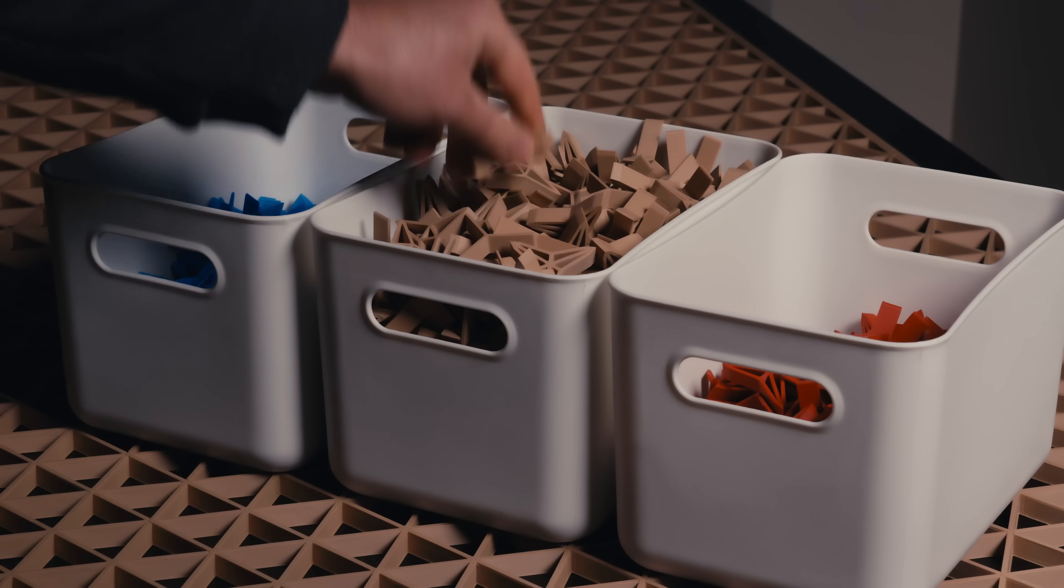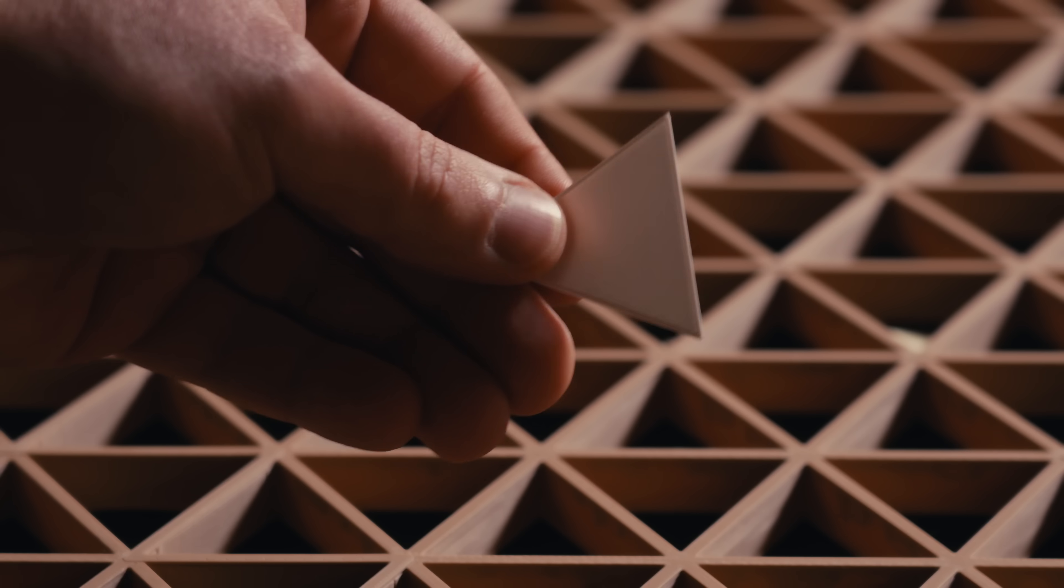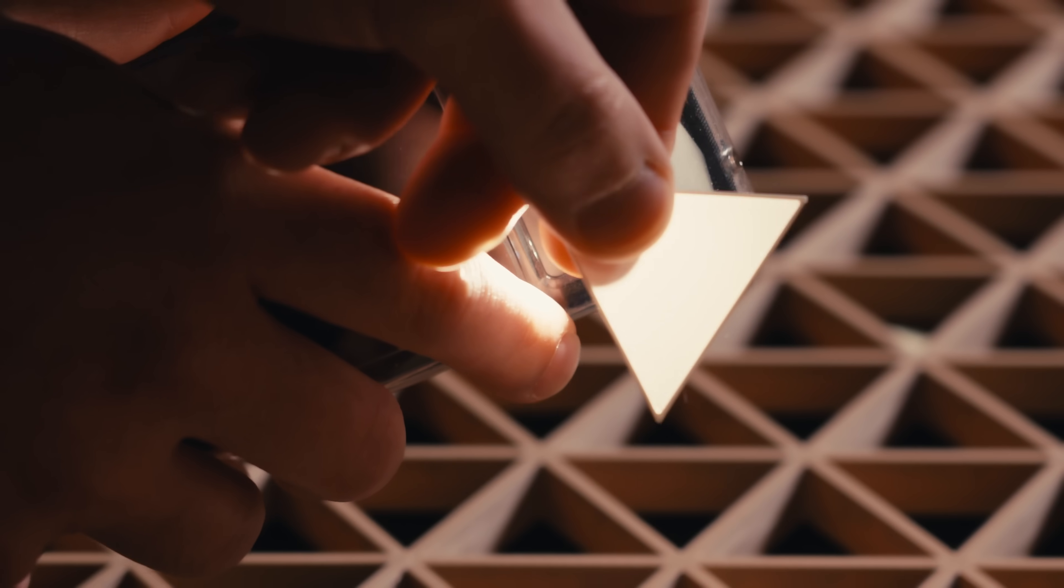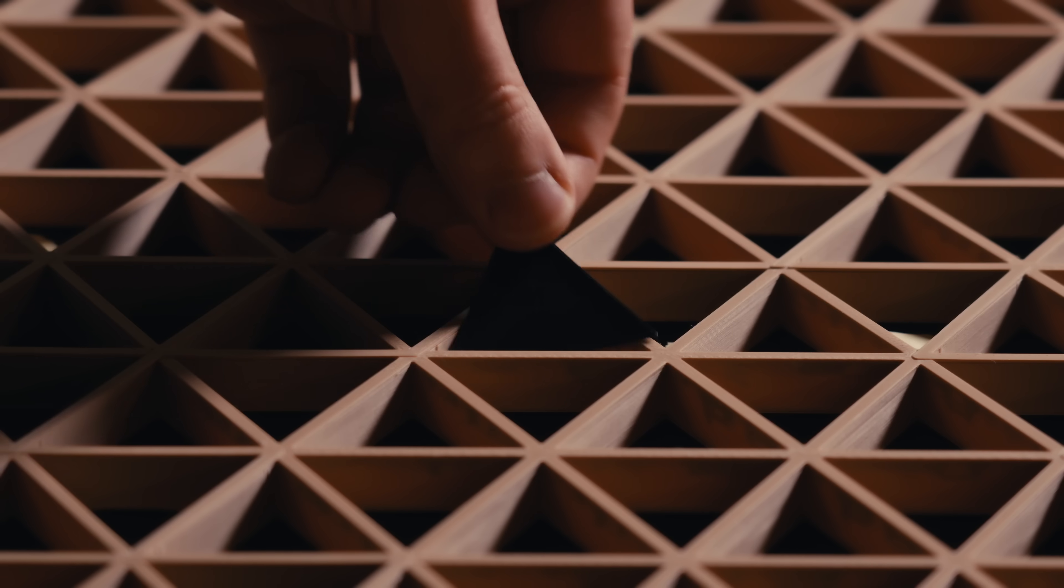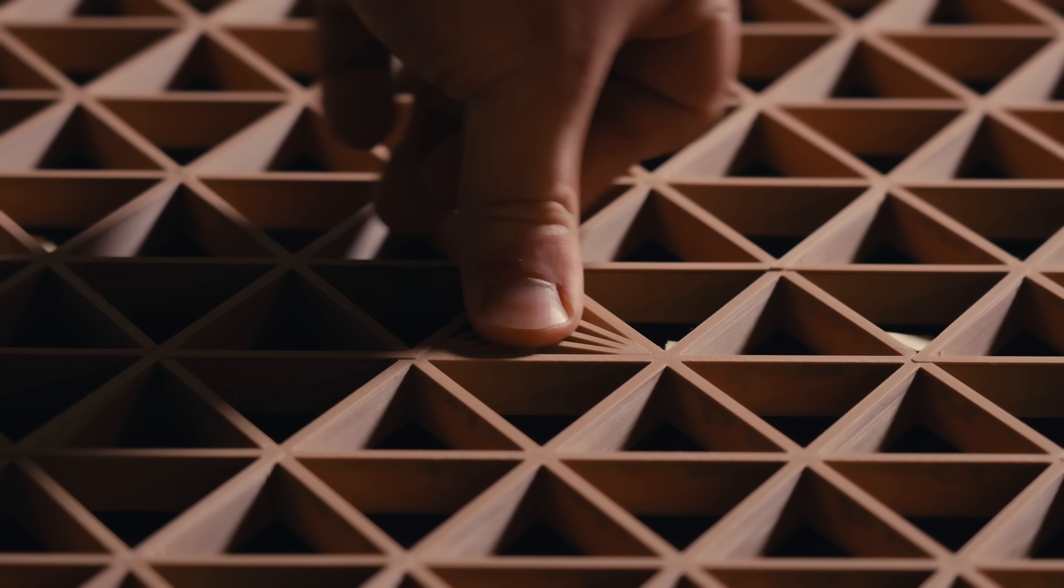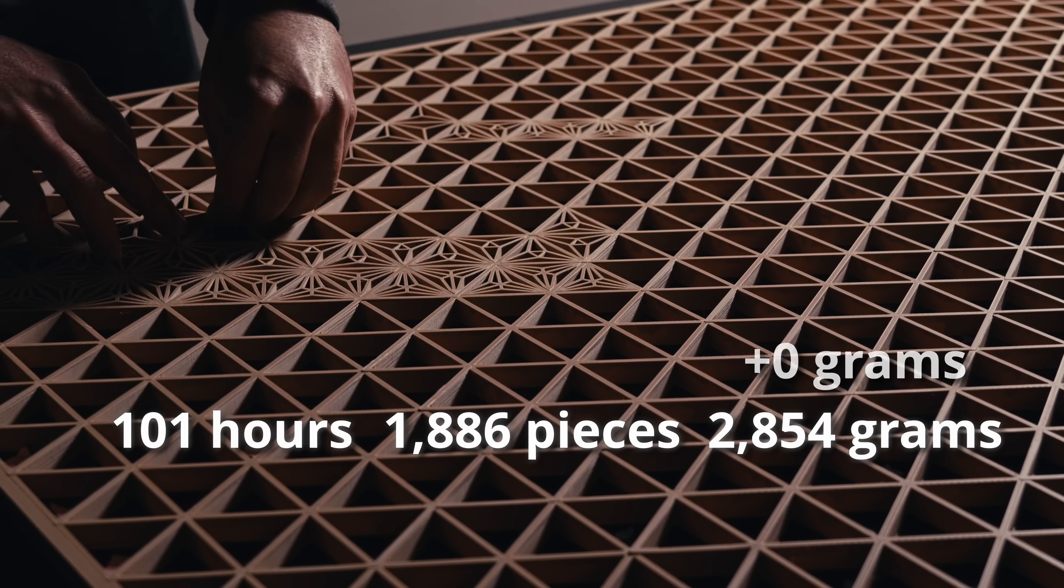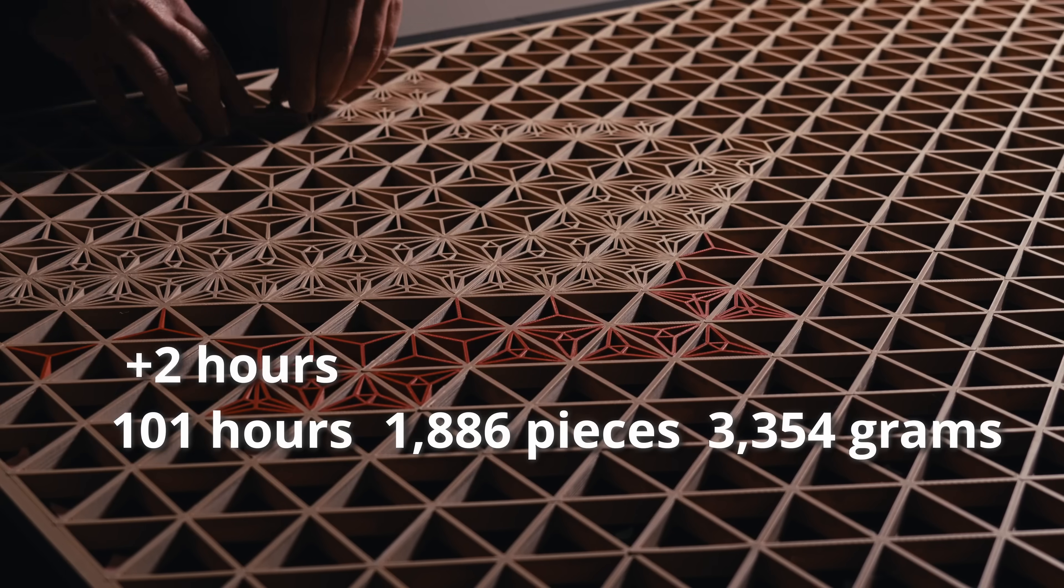Finally, for the inserts, each insert required a background piece, which if using a translucent filament can be used as a way to backlight the panel. For this panel, I wanted the inserts to stand out from the background, so I used matte black filament. In total, I needed 1650 background pieces, which used 500 grams and 20 hours to print.